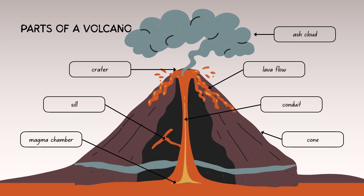Above the eruption, you can see an ash cloud. This cloud consists of fine particles of volcanic ash and dust that can be ejected high into the atmosphere during an eruption, affecting weather and air travel.